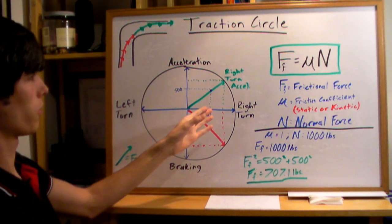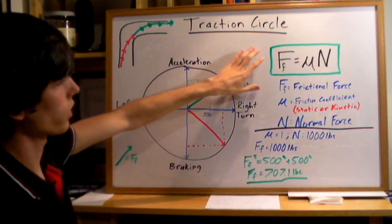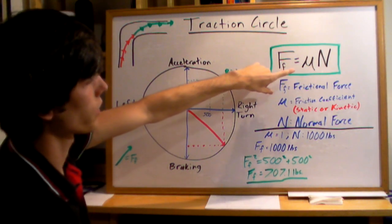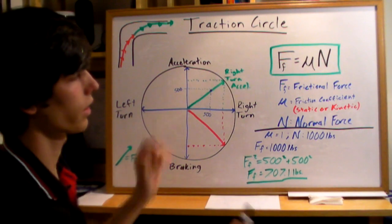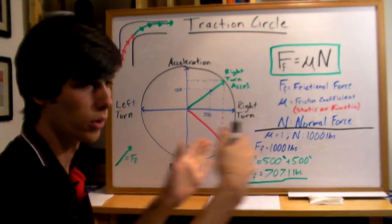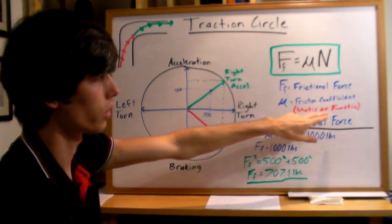What is this frictional force? The equation to calculate frictional force is F = μN. Mu is going to be the friction coefficient, static or kinetic. Static would be when you're not slipping. Kinetic would be once you do slip, and the kinetic will generally be lower.